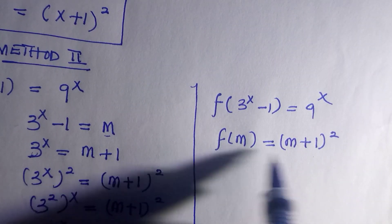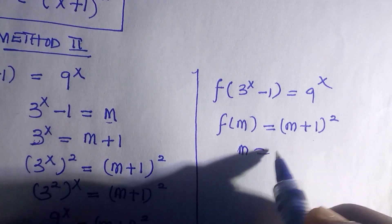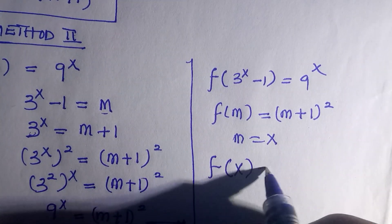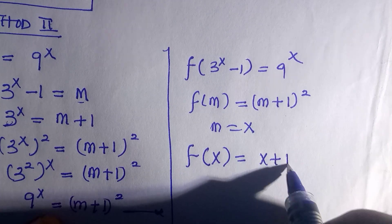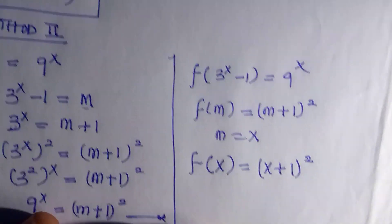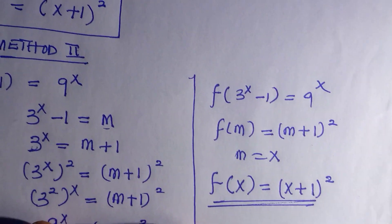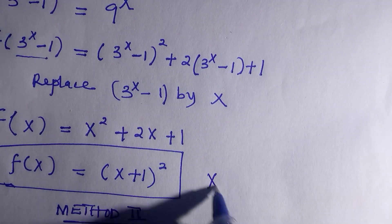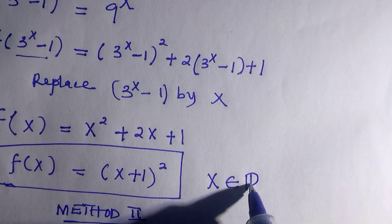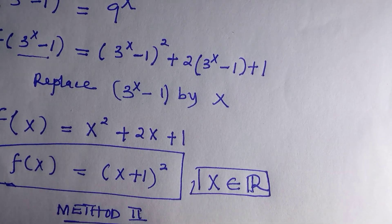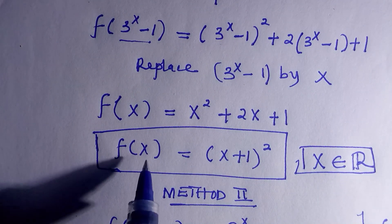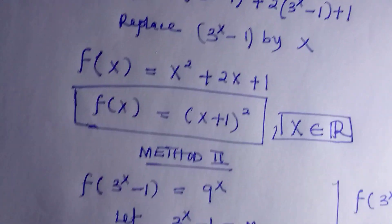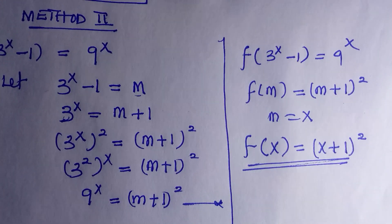We can replace m by x, so we have f of x equals x plus 1, everything raised to the power of 2. This is the same result as the first method. I hope you like this video — do well to like, subscribe, and share with friends and family. Don't forget to keep learning. I'll see you in the next class, bye bye.